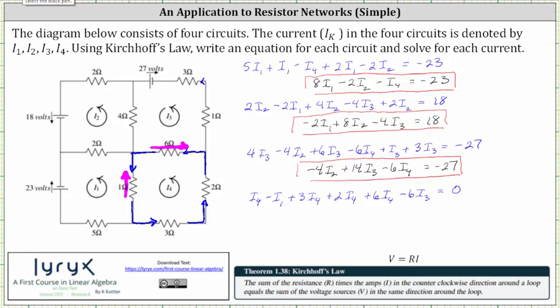Simplifying the last equation: negative I sub one, minus six I sub three, plus 12 I sub four equals zero. It's worth taking extra time to be careful when setting these up, because if we have one value off, we'll get the wrong answer. Now we'll take the four simplified equations, write an augmented matrix, and then write it in reduced row echelon form to solve the system.